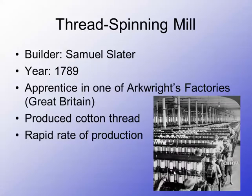The first invention I want to talk about is something called a thread spinning mill. This was invented by Samuel Slater way back in 1789. At this point our constitution is only two years old, so our country is very new. Slater actually worked as an apprentice in one of the Arkwright factories in Great Britain, which had gone through the Industrial Revolution slightly before we had. Basically what this invention did is it produced cotton thread at a very rapid rate, leading to increased production of cotton.